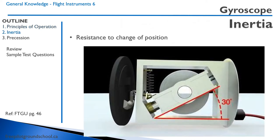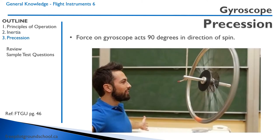Gyroscopic inertia is the resistance to the change in position. As you can see, here's a sample instrument — there's a gyroscope spinning in the middle. And if that instrument moves, that gyroscope will remain in the fixed position. Here's a neat little video about how gyroscopic precession works, showing how to hold a bicycle wheel up in a way that seems like it shouldn't be possible.